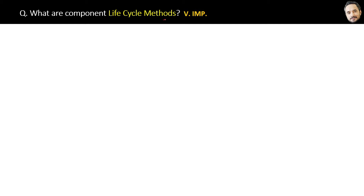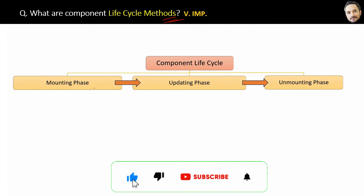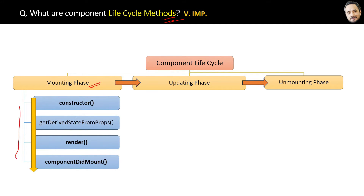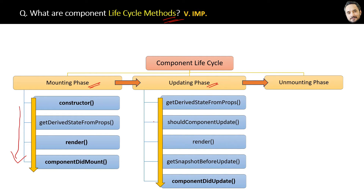What are component lifecycle methods? This is a very important question. We already know that there are three phases of the component lifecycle. Each phase has some lifecycle methods that execute in sequence. The first mounting phase has four lifecycle methods that execute one by one in this sequence. After the mounting phase, the updating phase will execute, and it has five lifecycle methods — again, they execute in the same sequence.